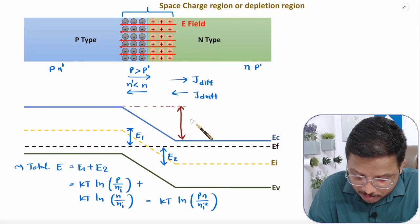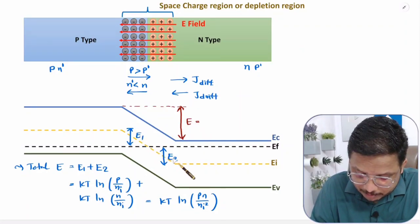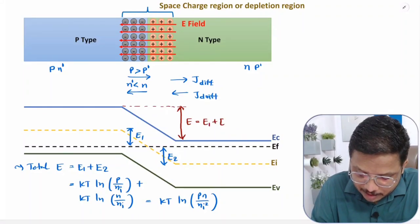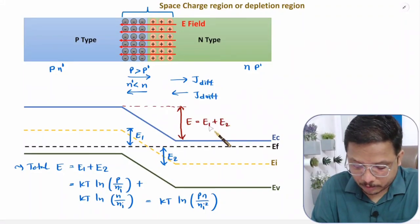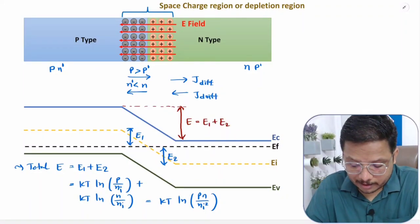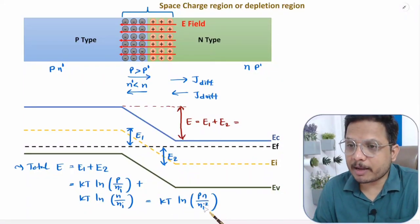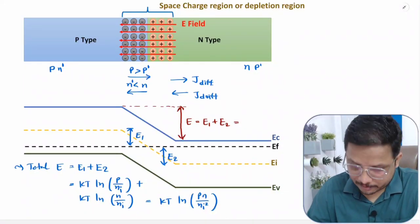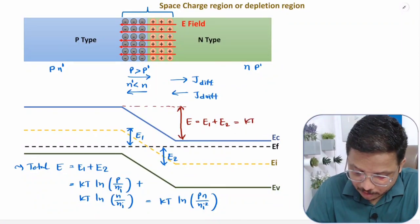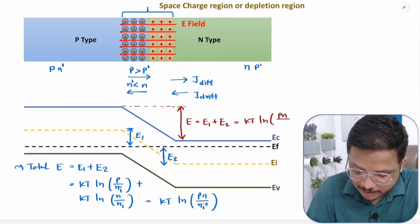To understand how much energy band bending is happening, the total energy E will be E1 plus E2. That E1 I have explained is KT · ln(PN / Ni²).